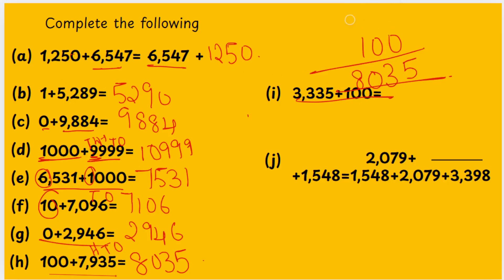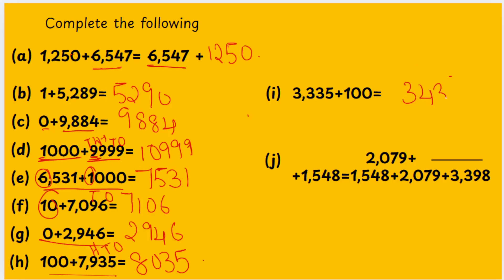For the next one: if you add 3,335 with 1 in the 100s place, we get 3,435. We add 1 in the 100s place: 3 plus 1 is 4, remaining numbers stay the same. Next: 2,079 plus blank equals 1,548. 1,548 is already given and 2,079 is already given, so strike them out. The remaining number is 3,398 — that is the unfilled blank. This is the fun fact about addition.